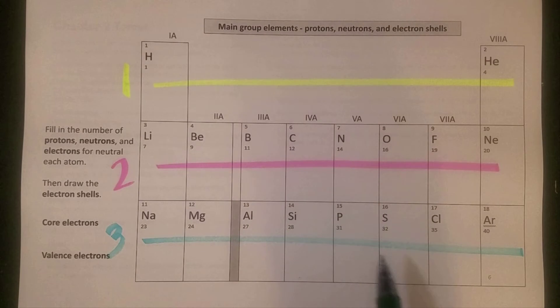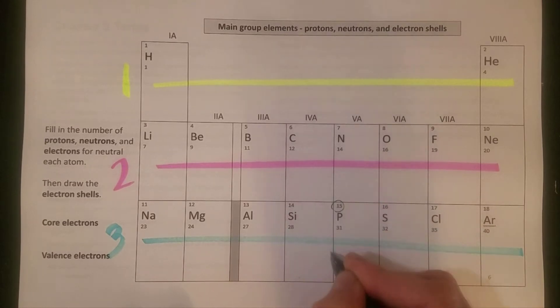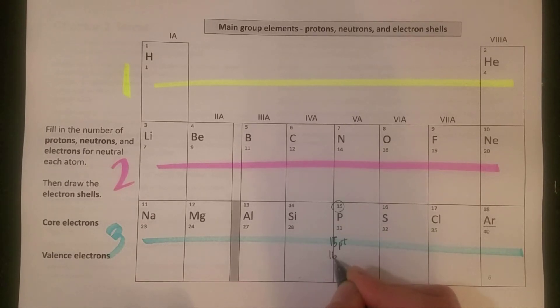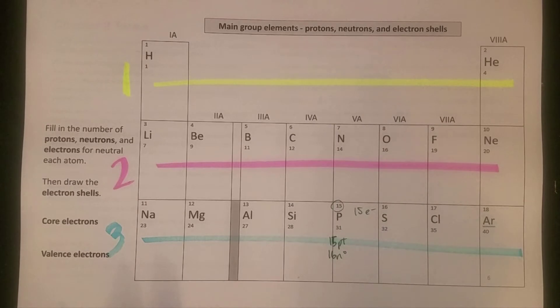Let's see if we can describe the shells and where the electrons are for phosphorus. For phosphorus, I know that it's got 15 protons, 31 minus 15 so 16 neutrons, and then I have to have 15 electrons to match those 15 protons.